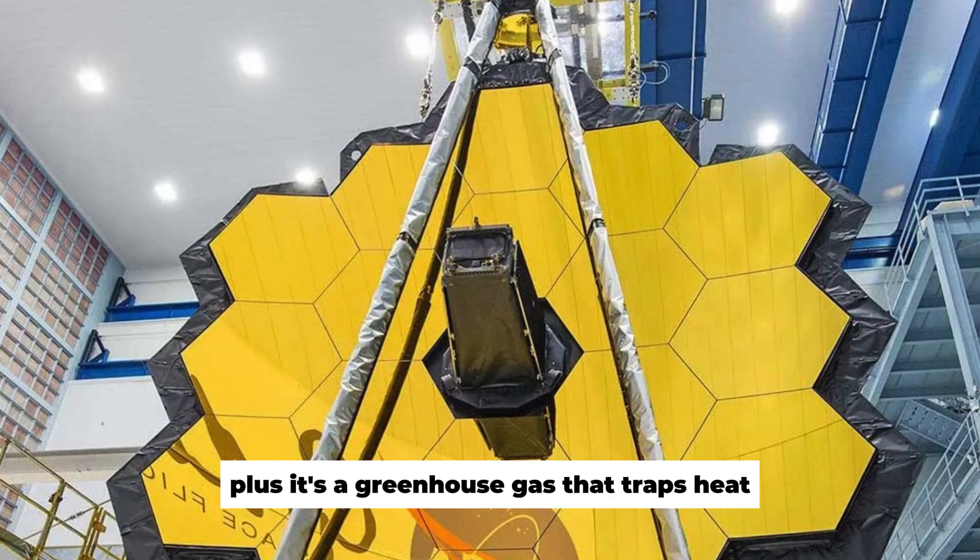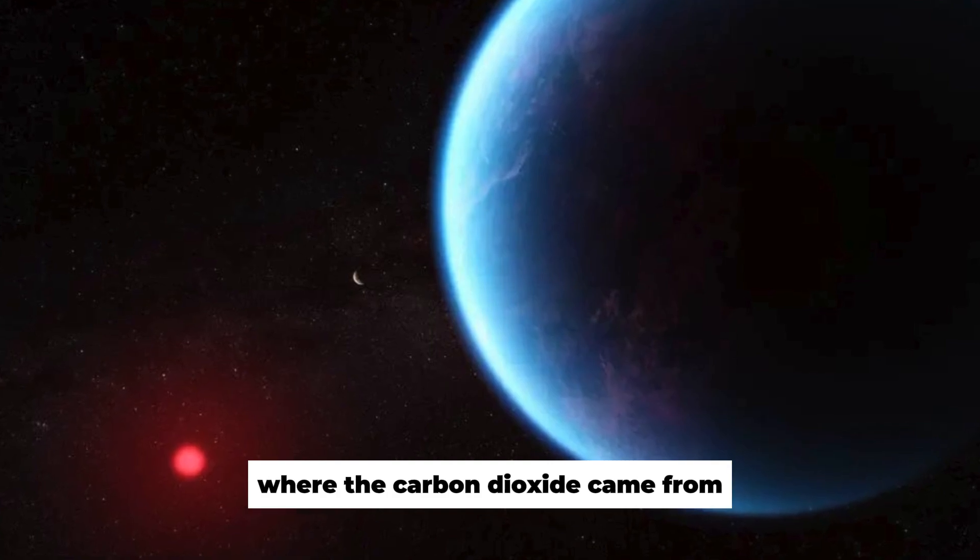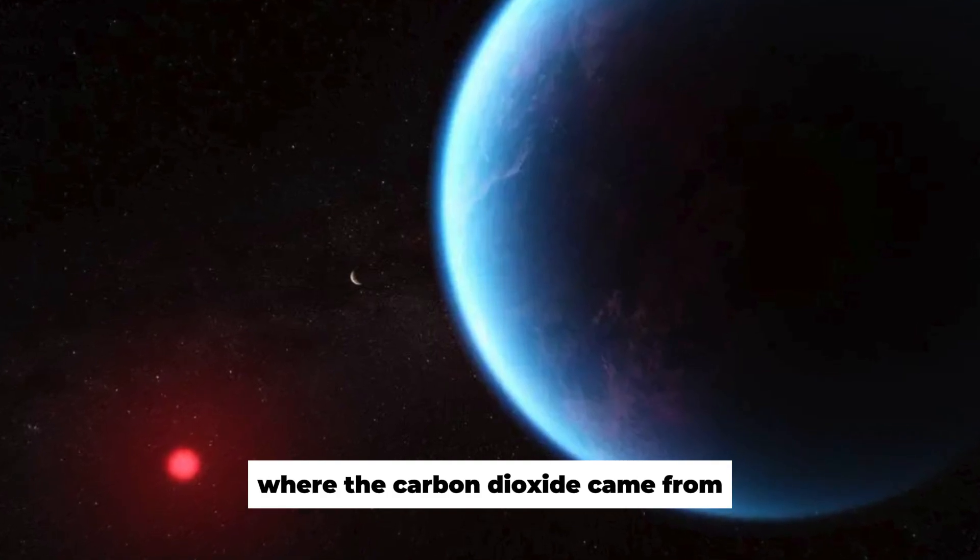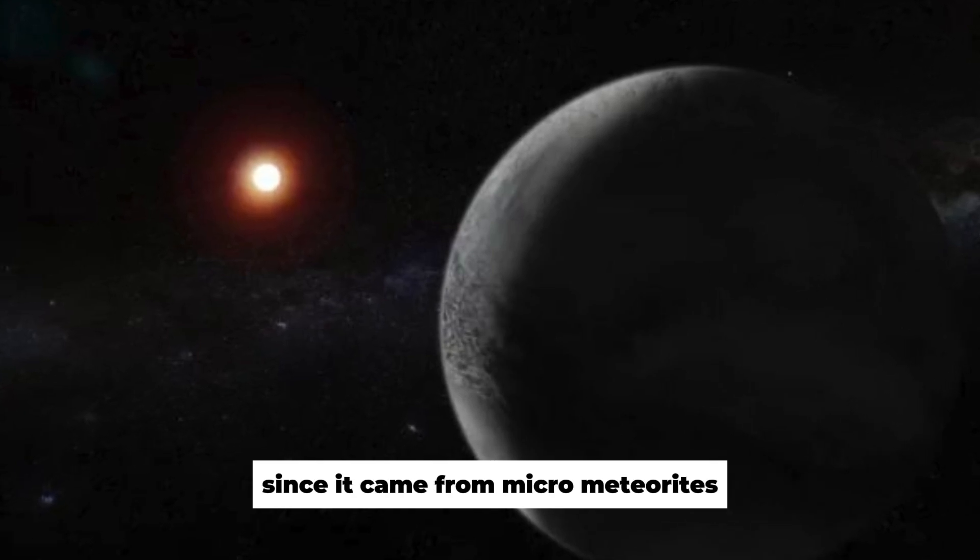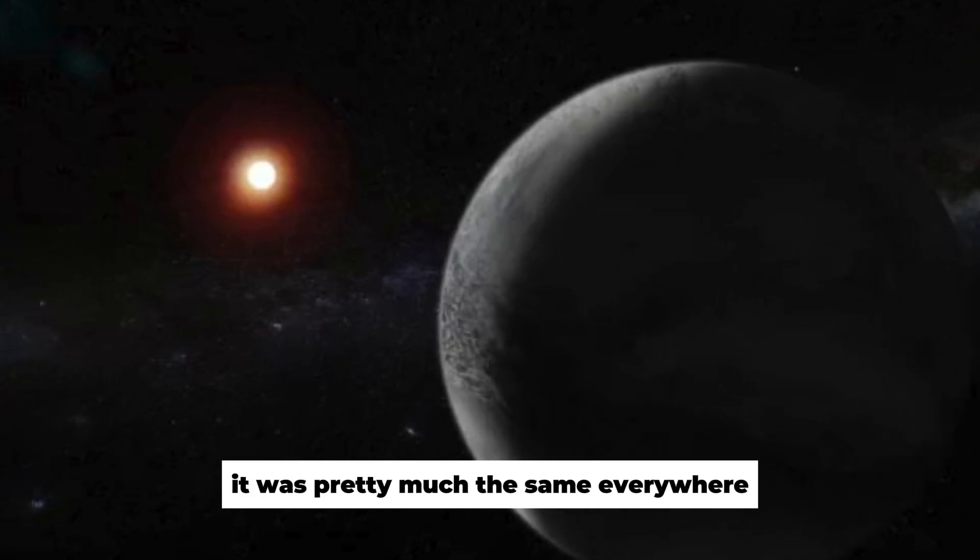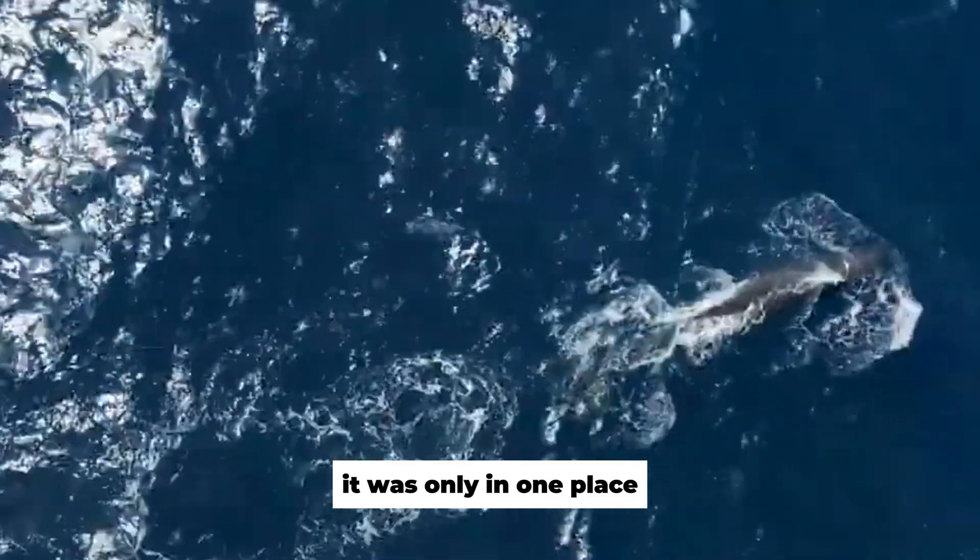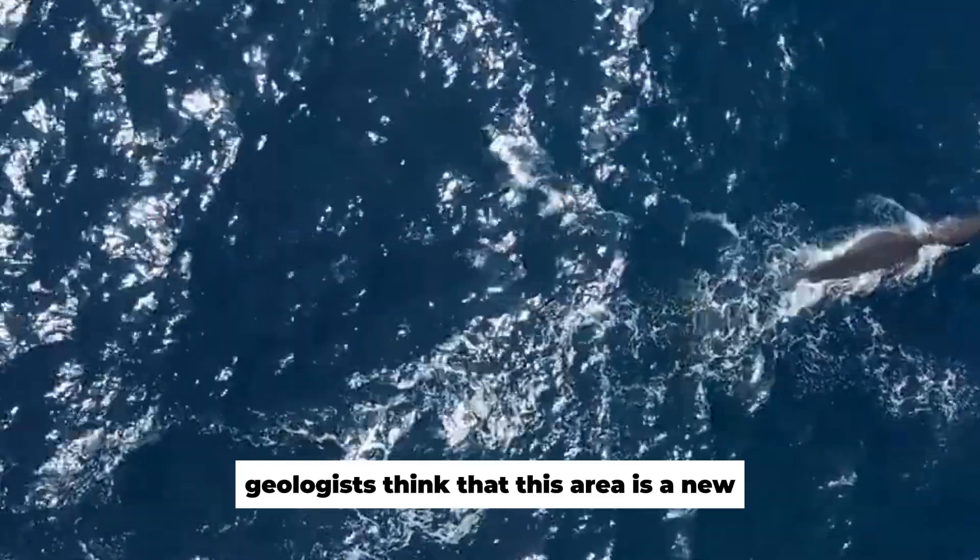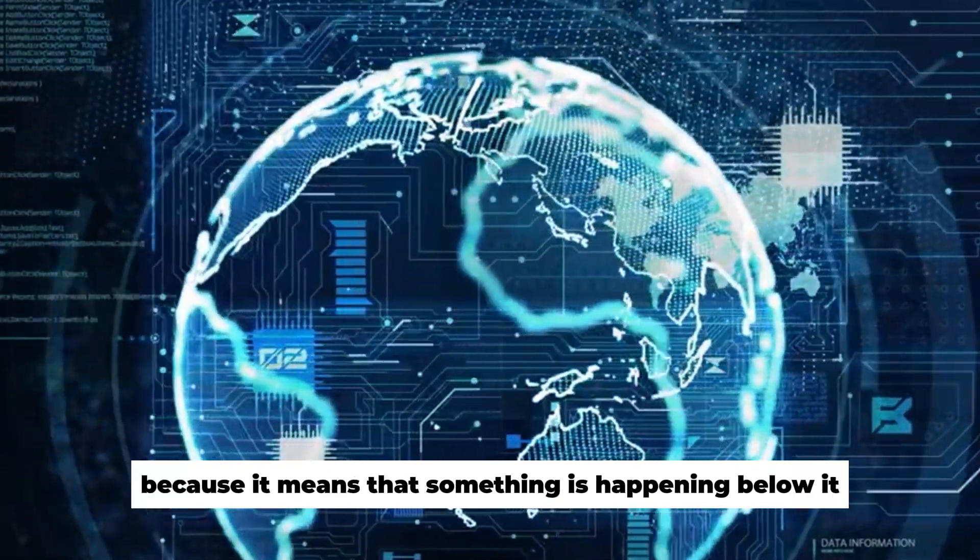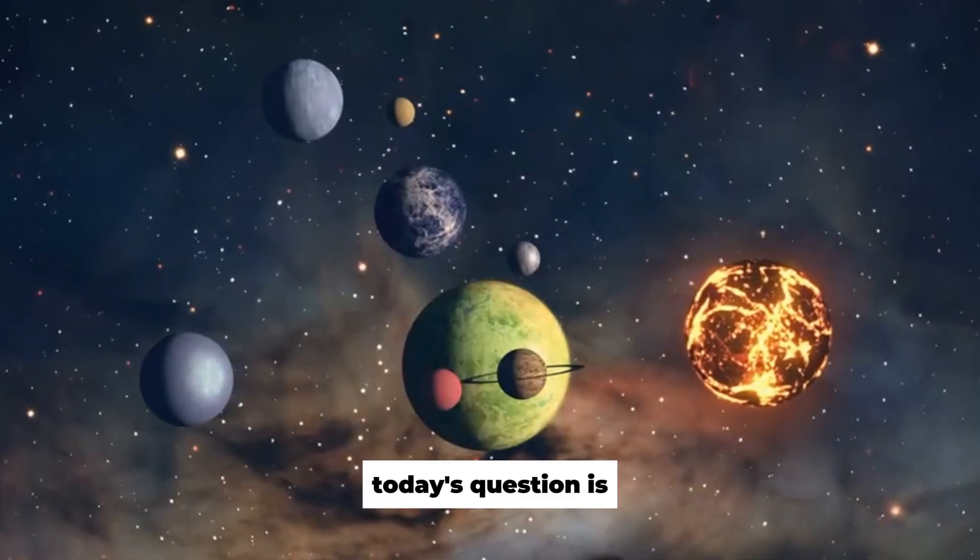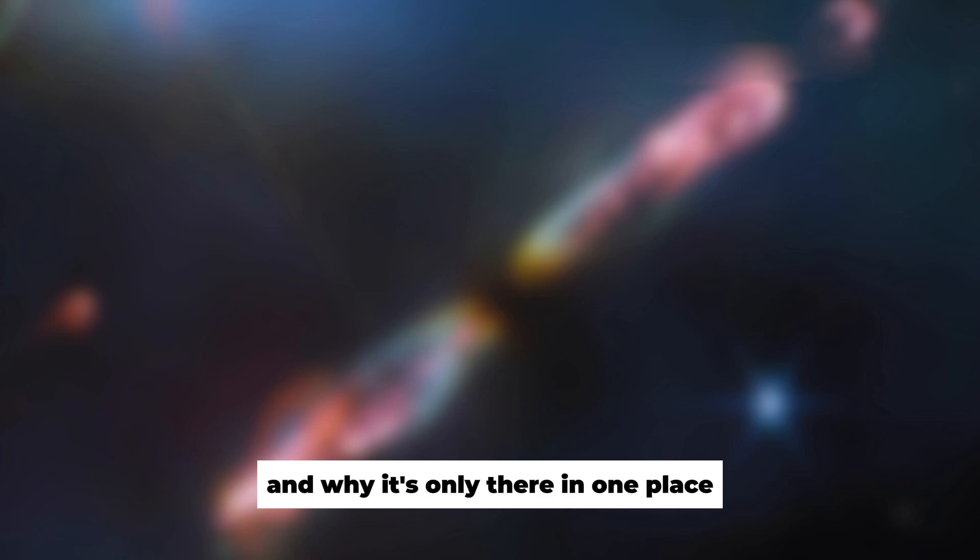Plus, it's a greenhouse gas that traps heat and changes the Earth's temperature. They were first interested in where the carbon dioxide came from. Did it come from outside of Europa or from other places? Since it came from micrometeorites or other things inside of the Moon, it was pretty much the same everywhere. In this case, though, it was only in one place. Geologists think that this area is a new chaotic terrain. This is very interesting because it means that something is happening below it. Today's question is how carbon dioxide got to the surface of Europa and why it's only there in one place.